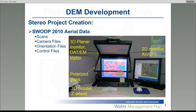The first stage of our pilot project was to generate a high-resolution DEM. In order to do this, we needed to set up a stereo project using the soft copy software and the SWOOP 2010 aerial data. The SWOOP 2010 aerial data includes the scans, the camera files, the orientation files, and the control files. When used together in a soft copy system, we're able to capture 3D hydrology and 3D point collections.